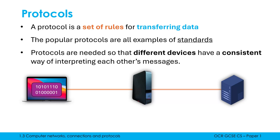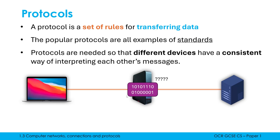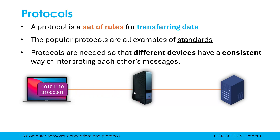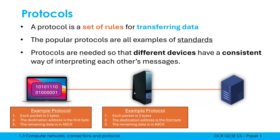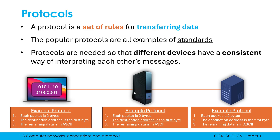If my laptop wants to send a message to a server, the message is in binary — but what does that message mean? It doesn't know what that message means unless there are a clear set of rules which tell it. It would be much better to agree upon a set of rules upfront. Here we have three rules as part of a simple example protocol: each packet is two bytes, the destination address is in the first byte, and the remaining data is in ASCII.